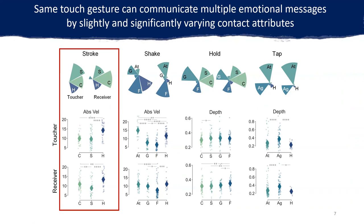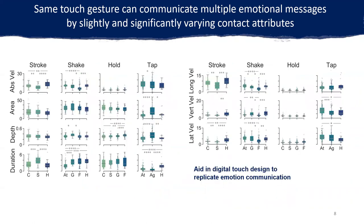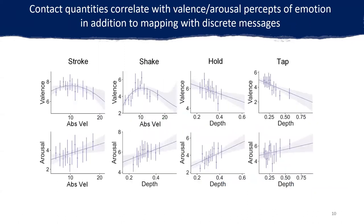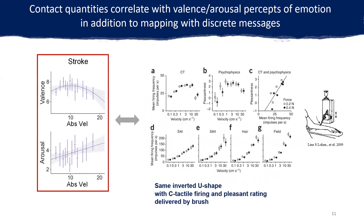For example, people can use a stroking gesture to express calm, sympathy, and happiness, where happiness is typically delivered with a much higher stroking velocity. We further summarized the contact profile of each emotional message in terms of contact attributes. The importance of each attribute in discriminating those messages was also derived, which could aid in the design and optimization of digital social touch. In addition to discrete messages, we also found that contact attributes correlate with the emotional ratings of valence and arousal, especially for the stroking gesture.